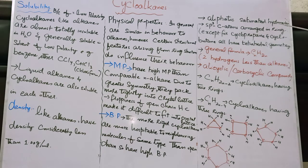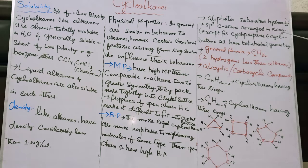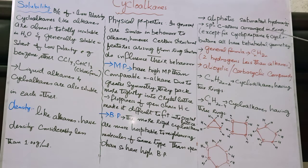Cycloalkanes are basically aliphatic saturated hydrocarbons. They have all sigma bonds, with sp3 hybridized carbon atoms arranged in a ring. The main difference between alkanes and cycloalkanes is that alkanes are straight-chain hydrocarbons, whereas cycloalkanes have a ring structure.